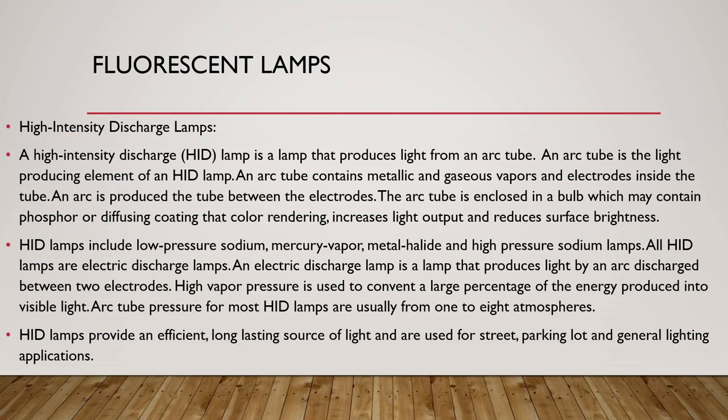High density discharge lamps: a high density discharge lamp is a lamp that produces light from an arc tube. An arc tube is the light-producing element of an HID lamp. An arc tube contains metallic and gaseous vapors and electrodes inside that tube.